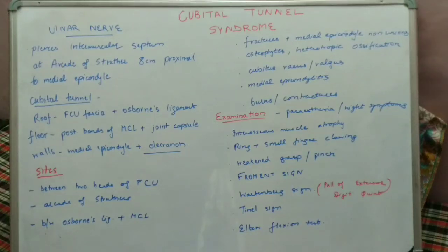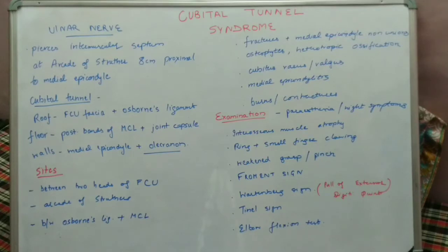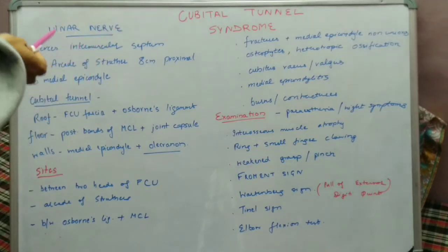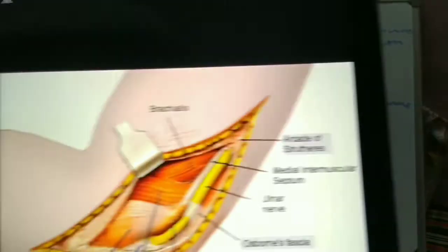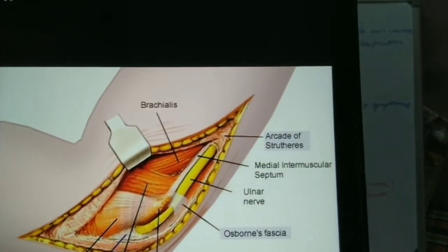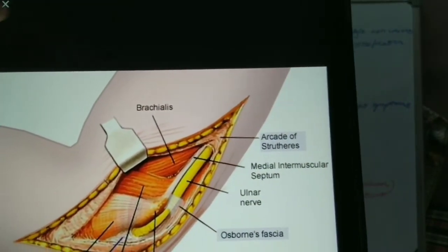In this video we will study about the cubital tunnel syndrome. As the name indicates, it is a syndrome occurring in the cubital fossa region, and the nerve involved is the ulnar nerve. We should know the normal anatomy first. The ulnar nerve lies in the anterior compartment in the upper arm.